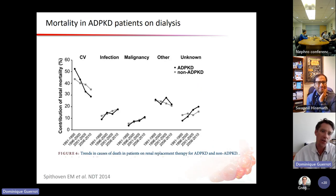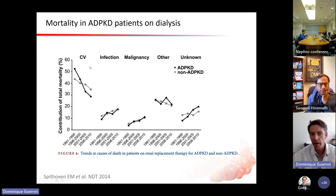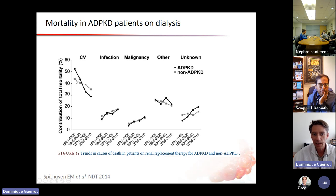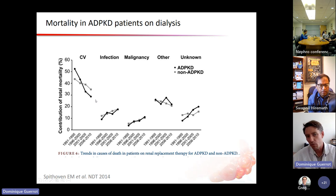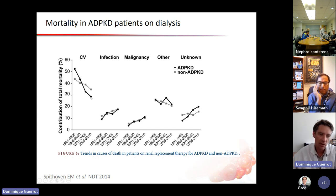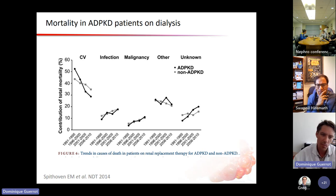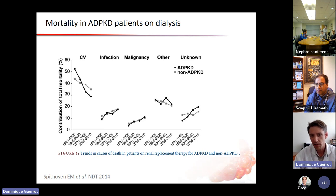I'd like to start with good news. In this registry, when you compare cardiovascular mortality in patients with ADPKD versus non-ADPKD CKD patients on dialysis, cardiovascular mortality was higher in ADPKD patients in the initial stages but tends to decrease with time. This is probably because we better understand the pathophysiology of these disorders, and therapeutic management is actually tackling this aspect of the disease.